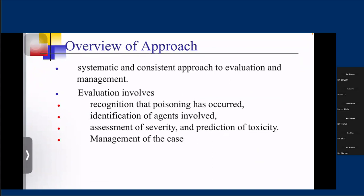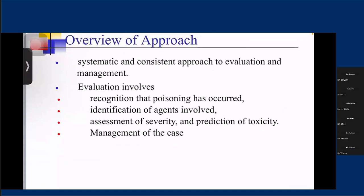Regarding the overview of management approach, we need to be systematic and consistent while evaluating and managing such patients. Evaluation should start with a high index of suspicion — most patients who commit suicide don't tend to tell the history of taking the medication. In patients who present with altered mentation or found unconscious, the most important step is early recognition of the poisoning. If we recognize late, the damage would happen and it would be very difficult to salvage the patient.